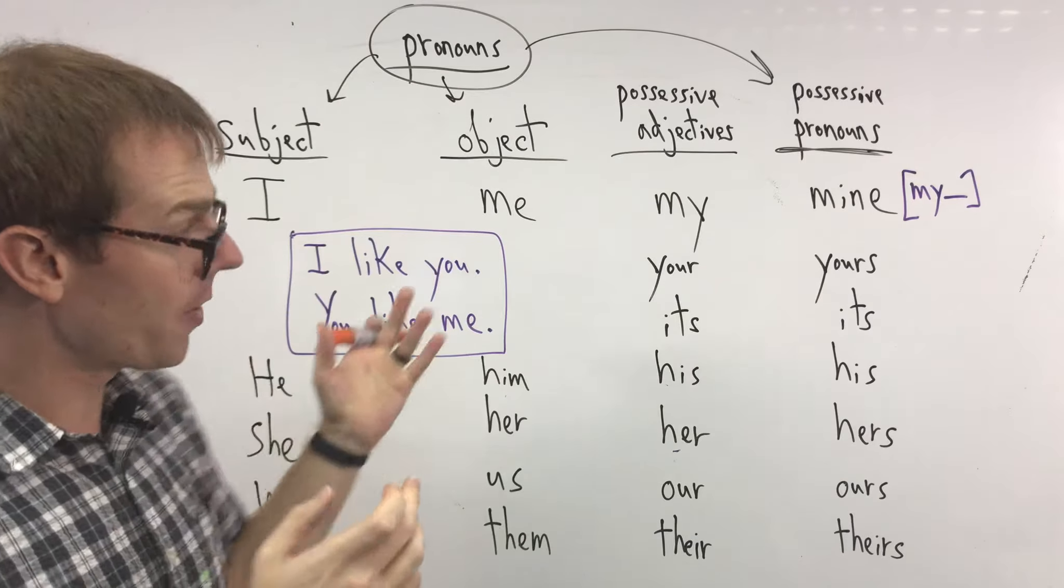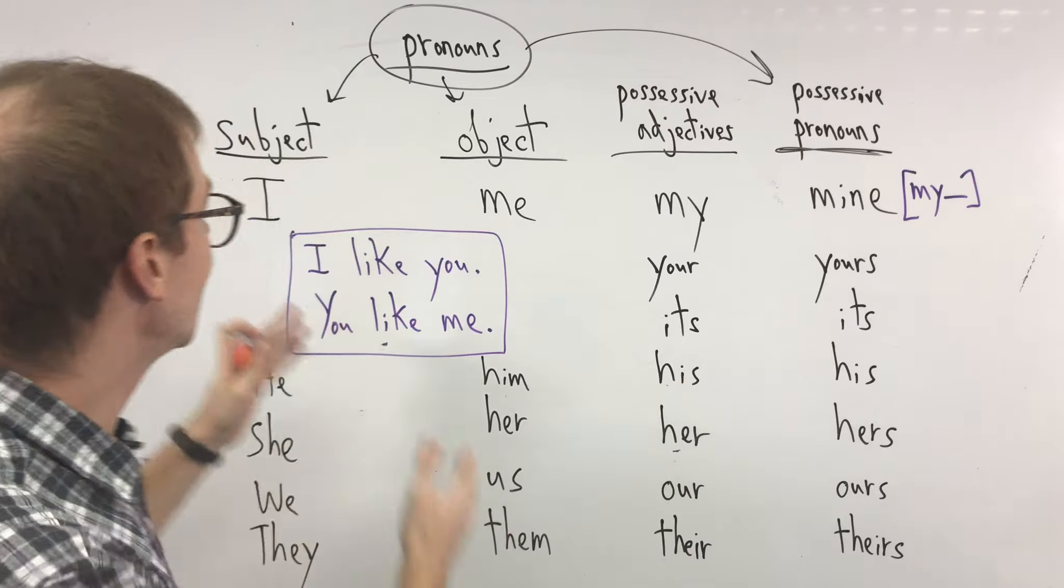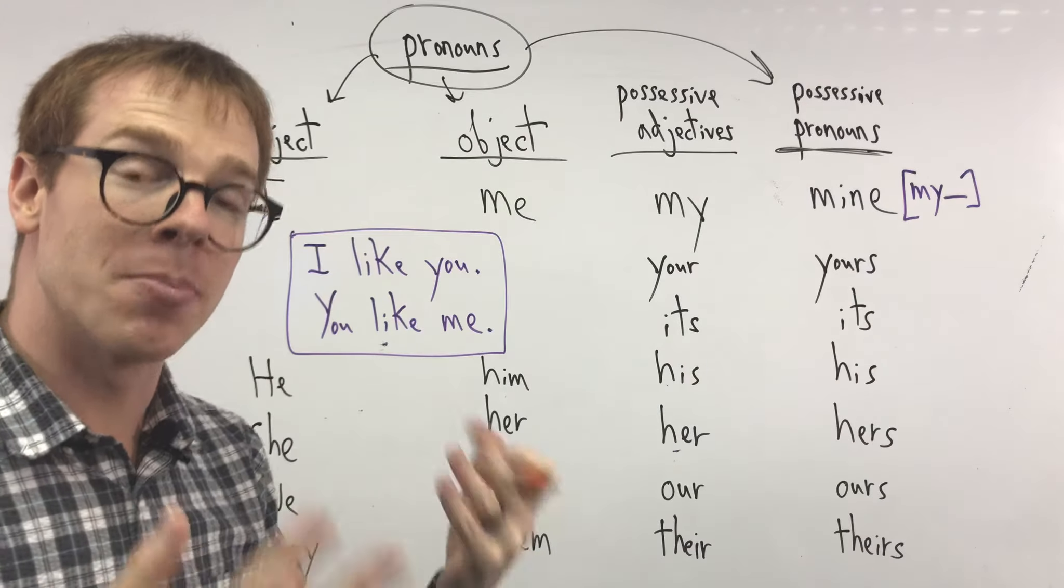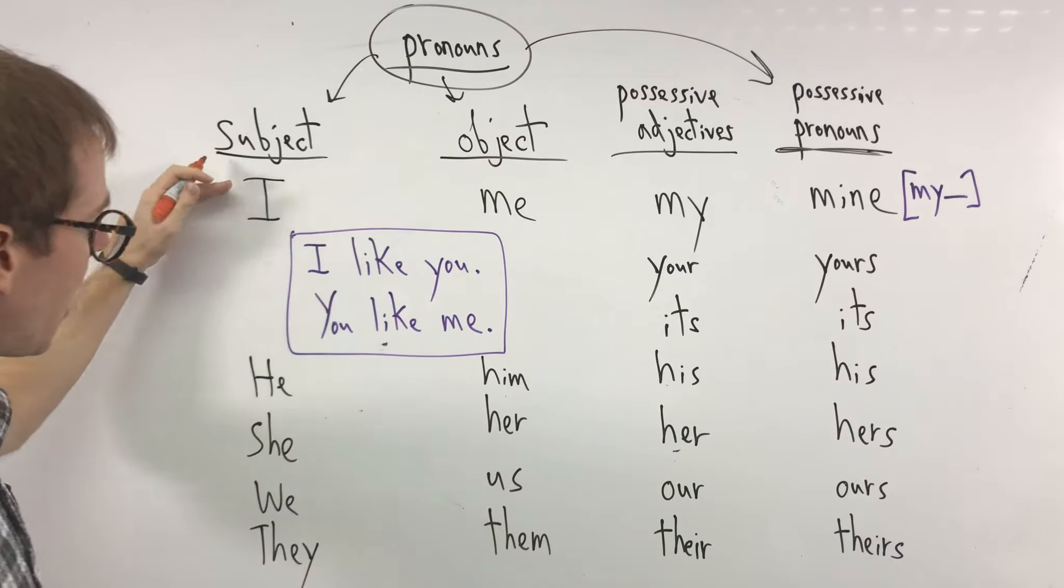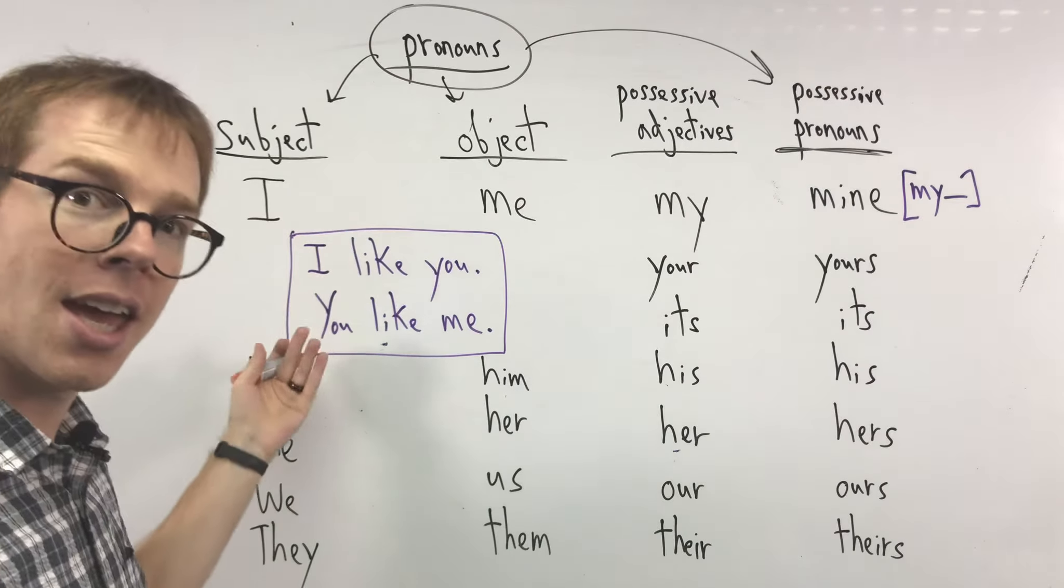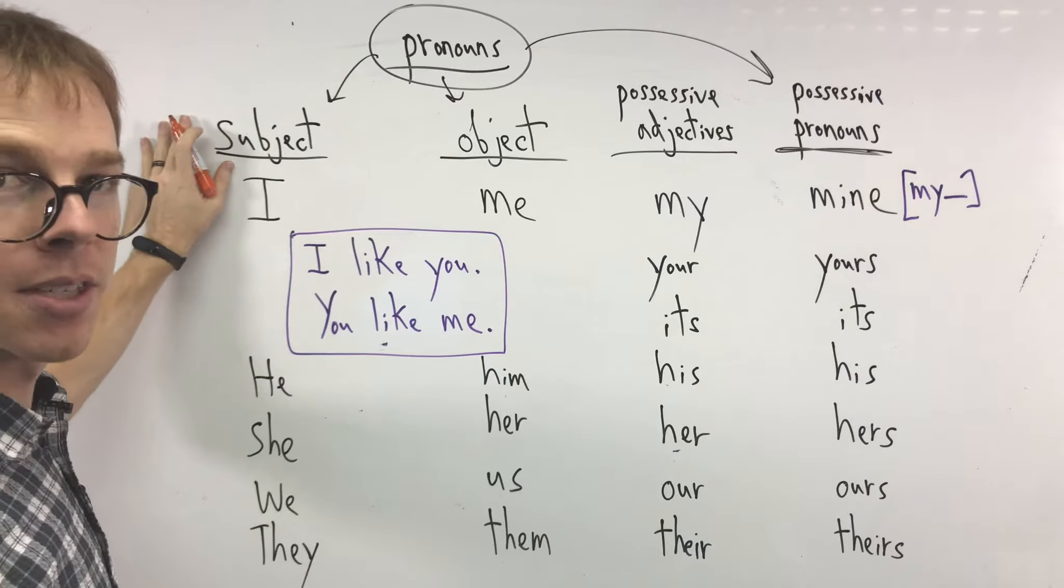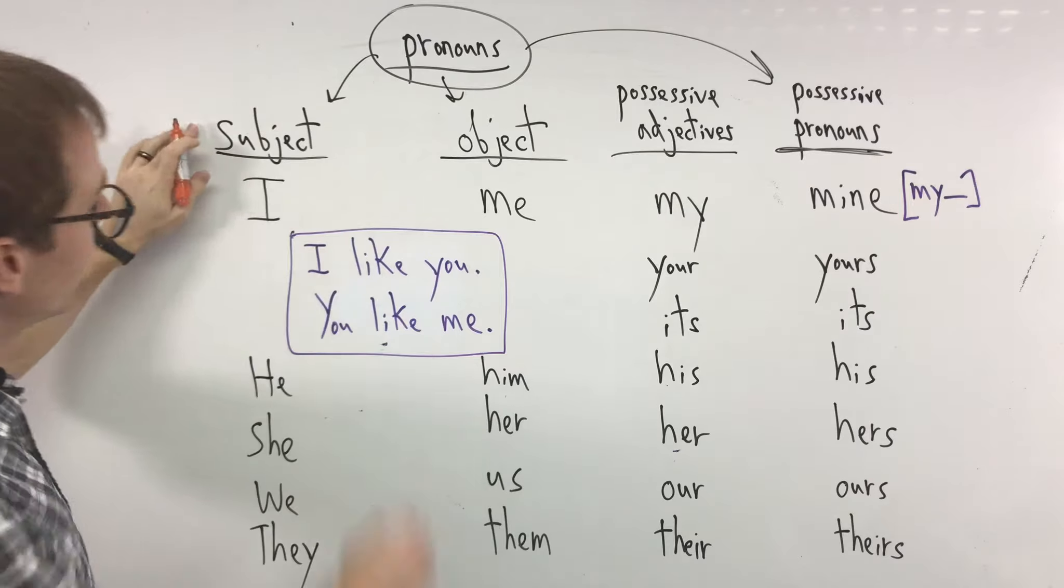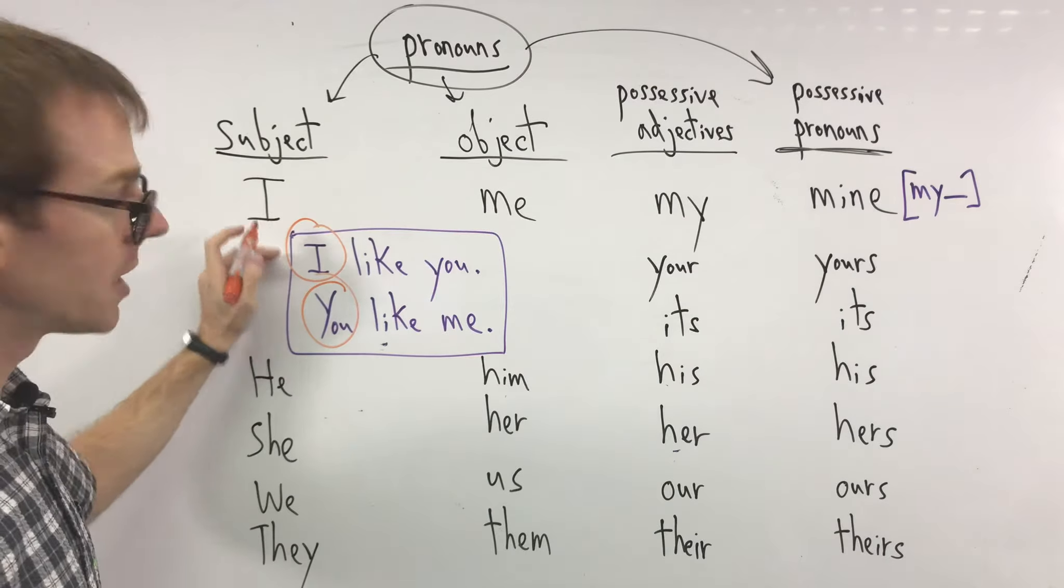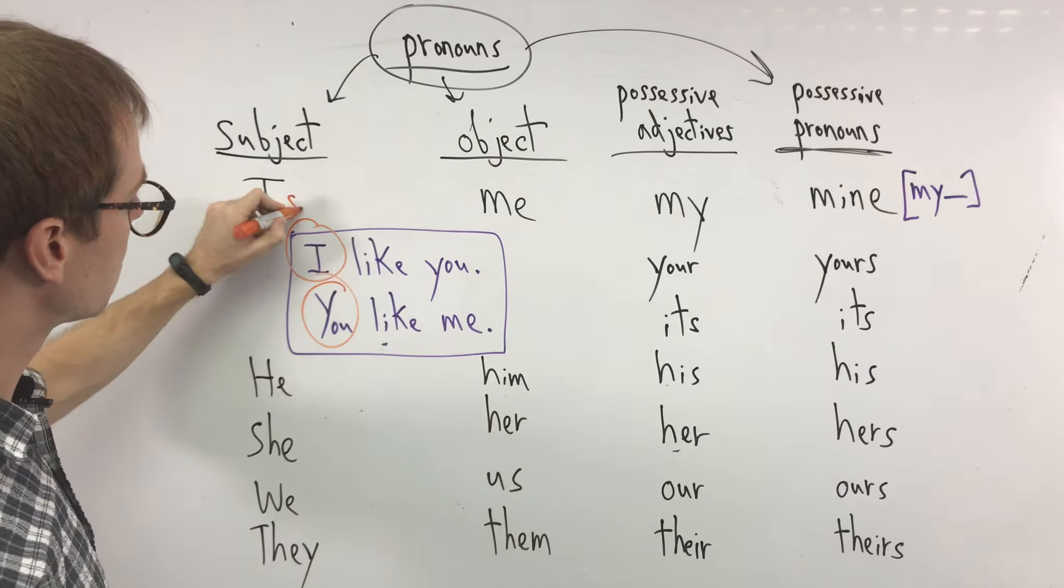So for us, now that we are in pre-intermediate, we don't only have the easy pronouns anymore. We started in elementary and beginner learning these: I, he, she, you, it, we, they. Those are called our subject pronouns. The subject in grammar is this one. It's the beginning of the sentence. Usually in English sentences we have a subject.